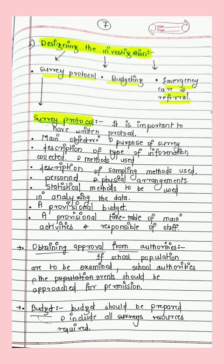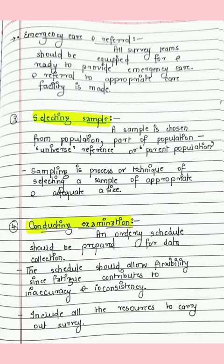Budget should be prepared including all resources required, including emergency cases and referrals. If during a survey examination someone requires emergency care, you must provide that care or refer them to the appropriate service or doctor. Then comes selecting the sample — a sample is chosen from the population, known as the universal parent population.